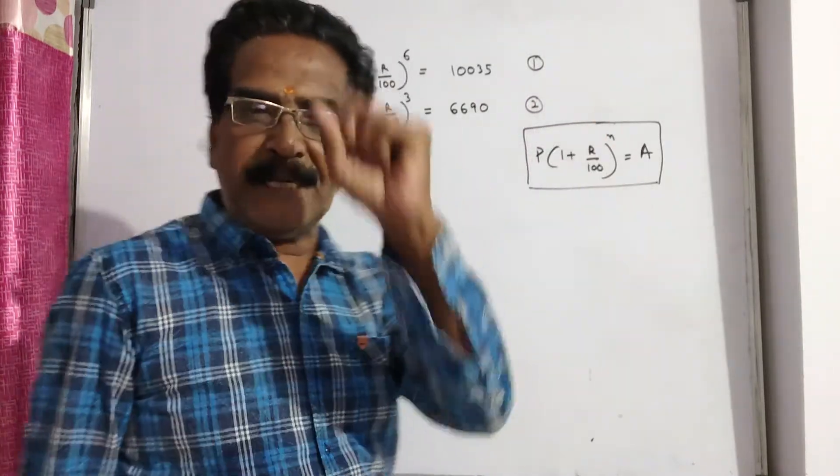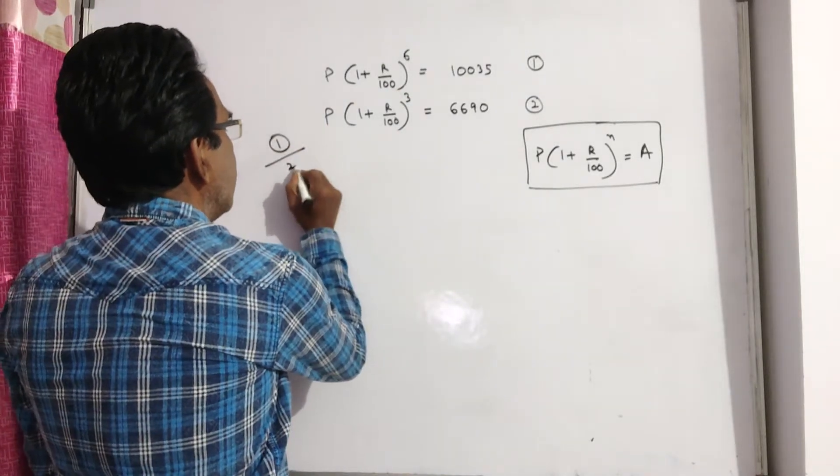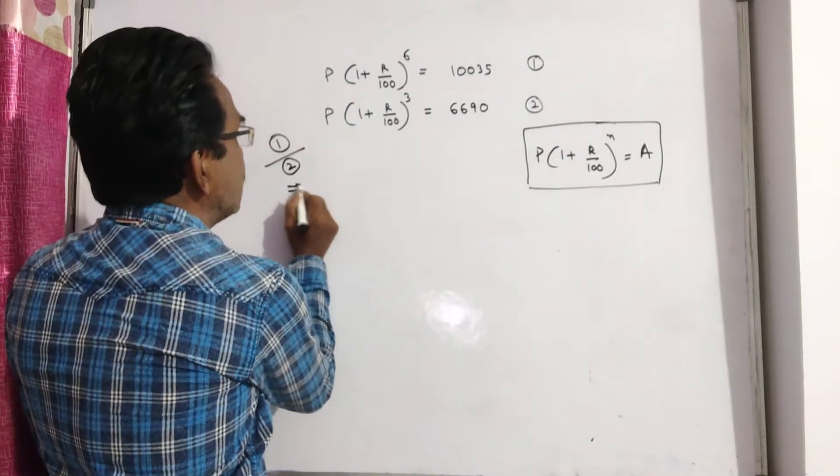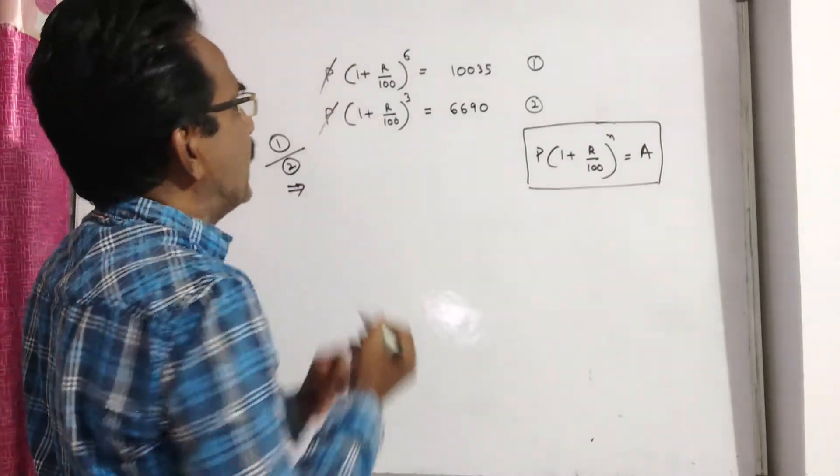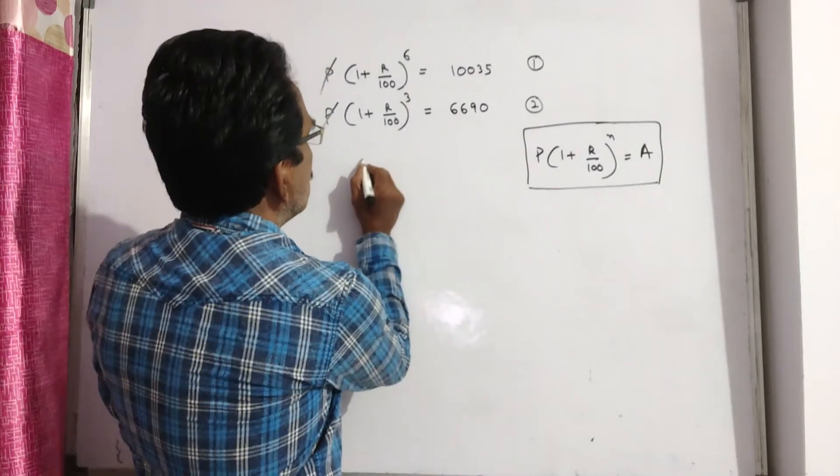Let us do 1 by 2. Equation 1 by equation 2 implies P gets cancelled.